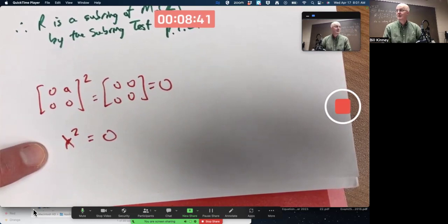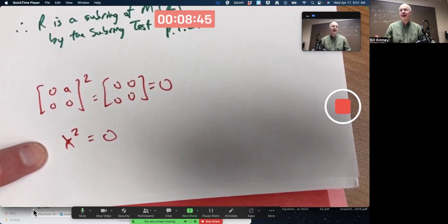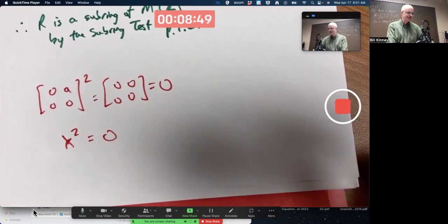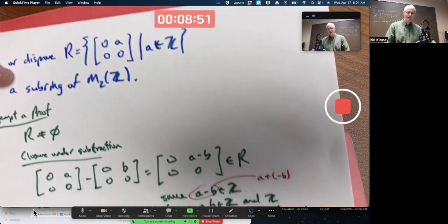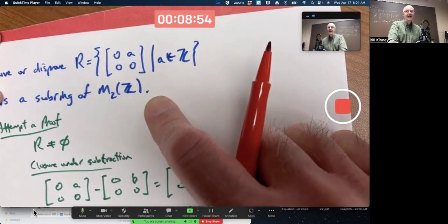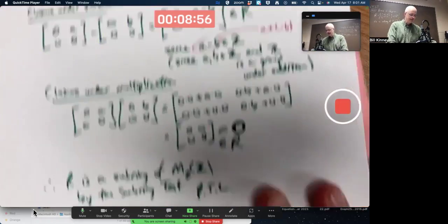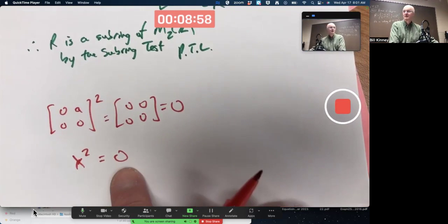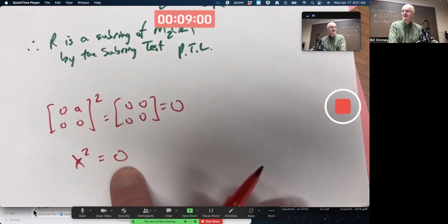Not like what happens with numbers, right? x squared equals 0 has just one solution, x equals 0. In this subring, which also means in this bigger ring, there are infinitely many solutions of this real simple polynomial equation. Not just one.